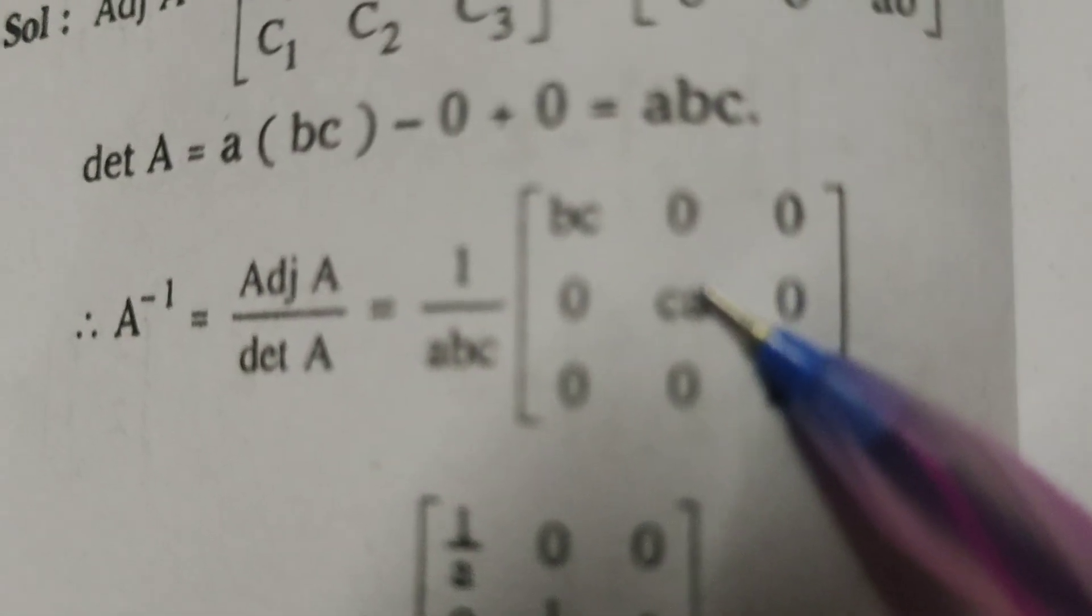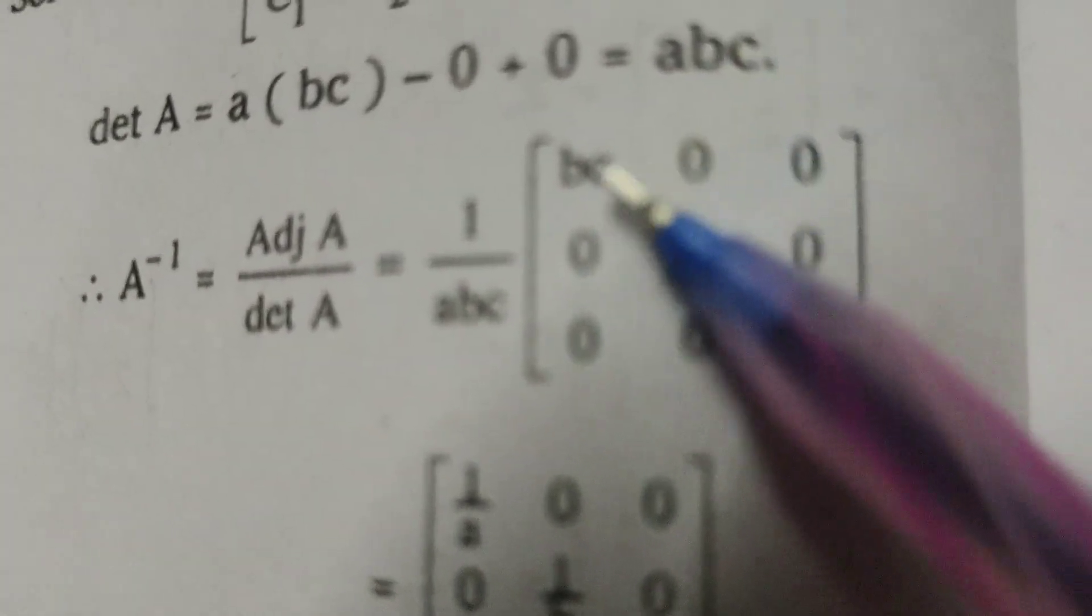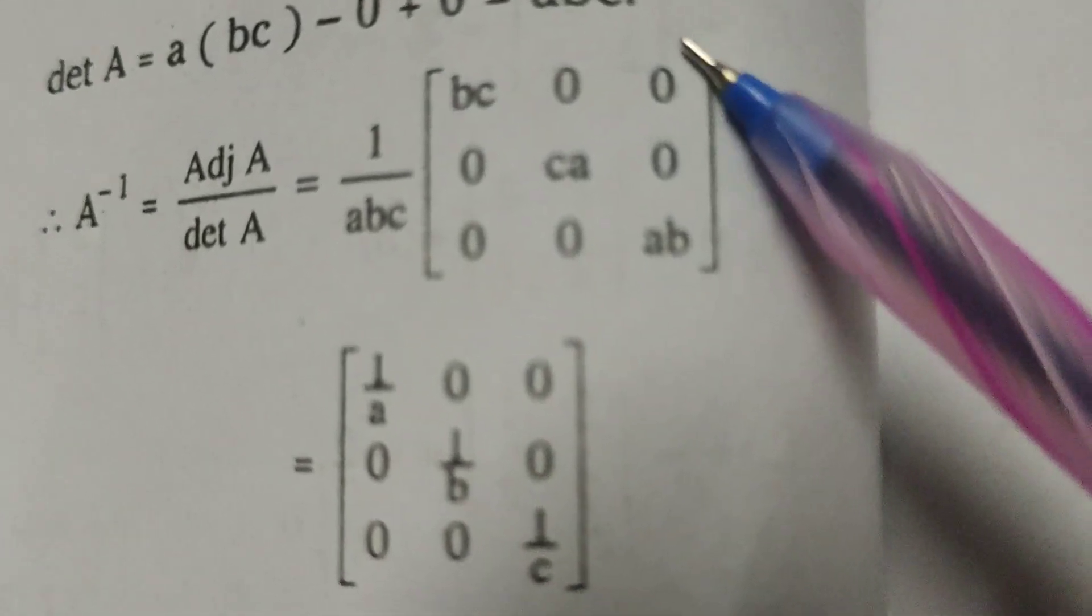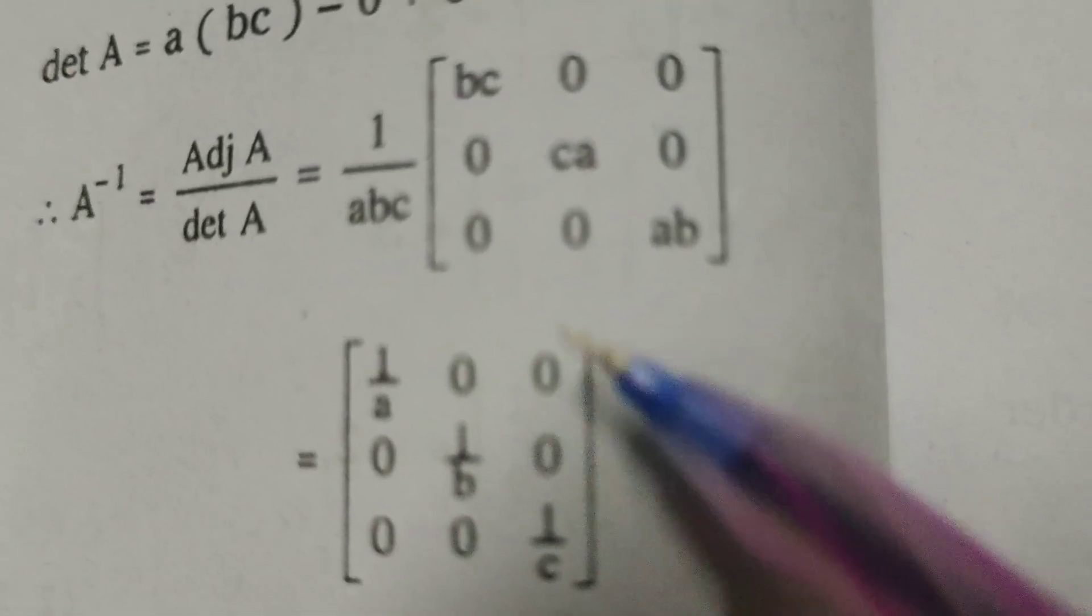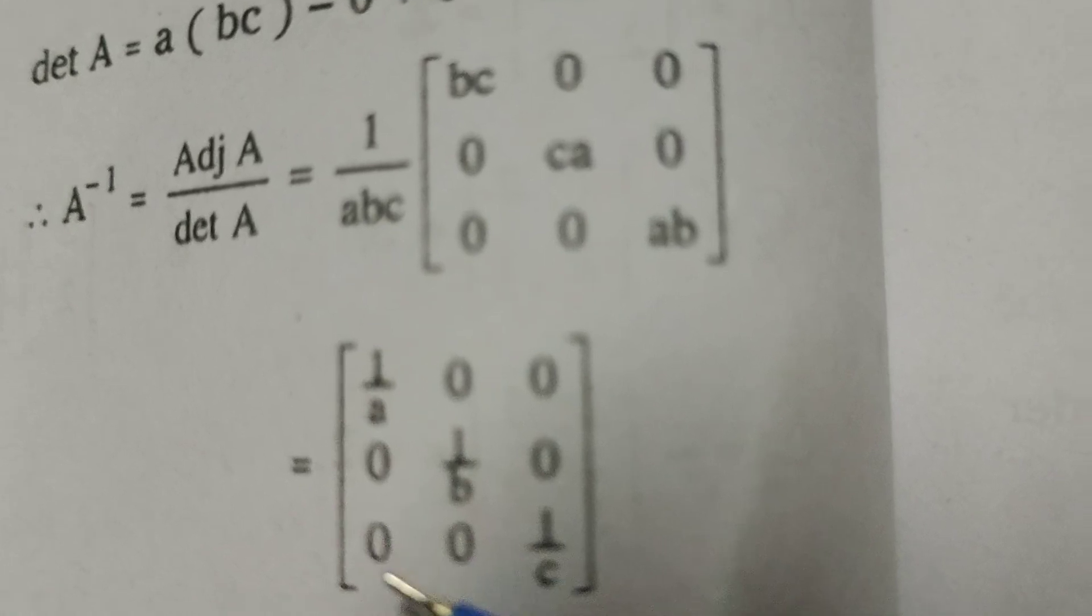Okay, now only here dividing bc by abc, that is 1 by a. And 0 by abc, that is 0. 0 by abc, that is 0. 0 by abc, again 0.